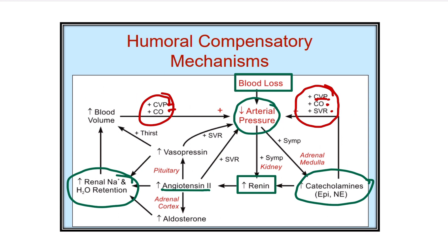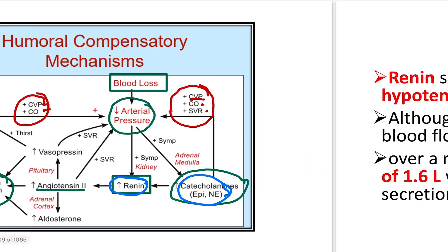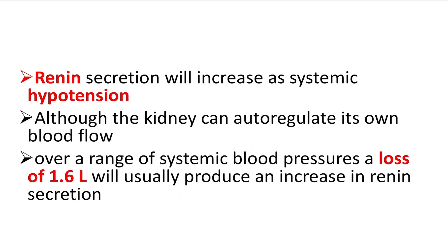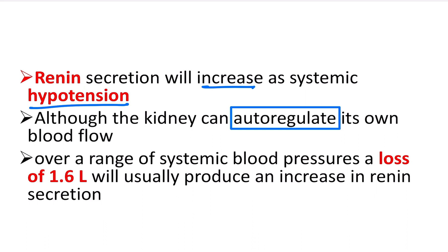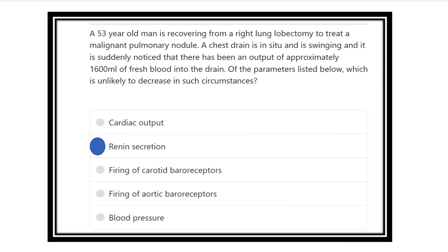So when there is blood loss, almost all substances reduce except two: renin and catecholamines (adrenaline and noradrenaline). Renin secretion will increase when there is loss of volume or hypotension. With approximately 1600ml of blood loss, renin secretion is activated. Therefore: cardiac output decreases, firing of carotid baroreceptor reduces, firing of aortic baroreceptor reduces, and blood pressure reduces. The only answer that increases is renin secretion.